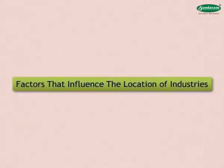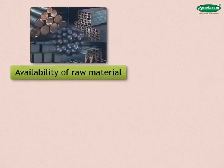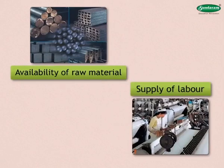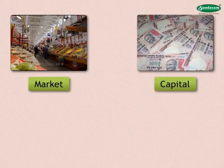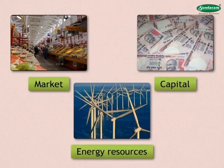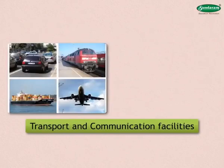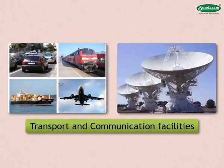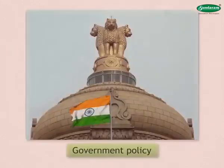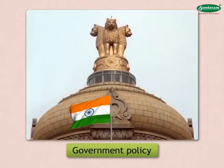Factors that influence the location of industries are: 1. Availability of raw material. 2. Supply of labour. 3. Market. 4. Capital. 5. Energy resources. 6. Transport and communication facilities. 7. Government policy.